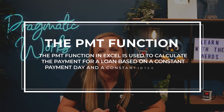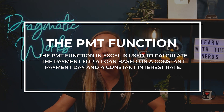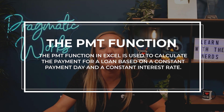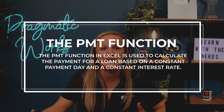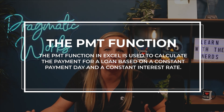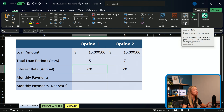The first function we are going to walk through will be the payment function, or PMT. The PMT function in Excel is used to calculate the payment for a loan based on a constant payment date and a consistent interest rate. Here in our Excel sheet, we're going to use this to determine a car loan payment. You'll see that the payment function has a few arguments that we need to include.